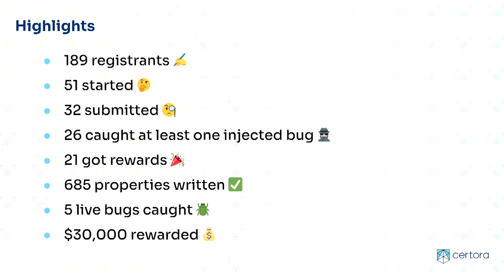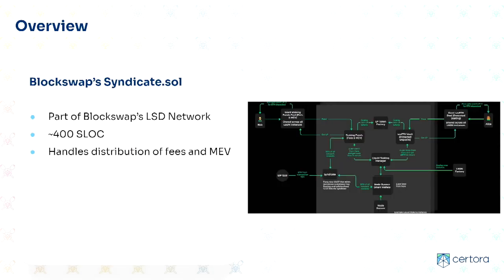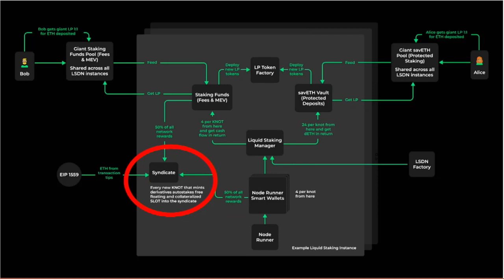We caught some bugs that were fixed, and rewarded participants with $30,000. Thanks to the BlockSwap team and the Code Arena team for facilitating this. The contract we verified is smaller but very important because it handles rewards — specifically the distribution of fees and MEV for node operators and stakers. It's a very core contract, and it was a good choice for the first formal verification contest since many people were learning the tool for the first time. It proved to be very successful.